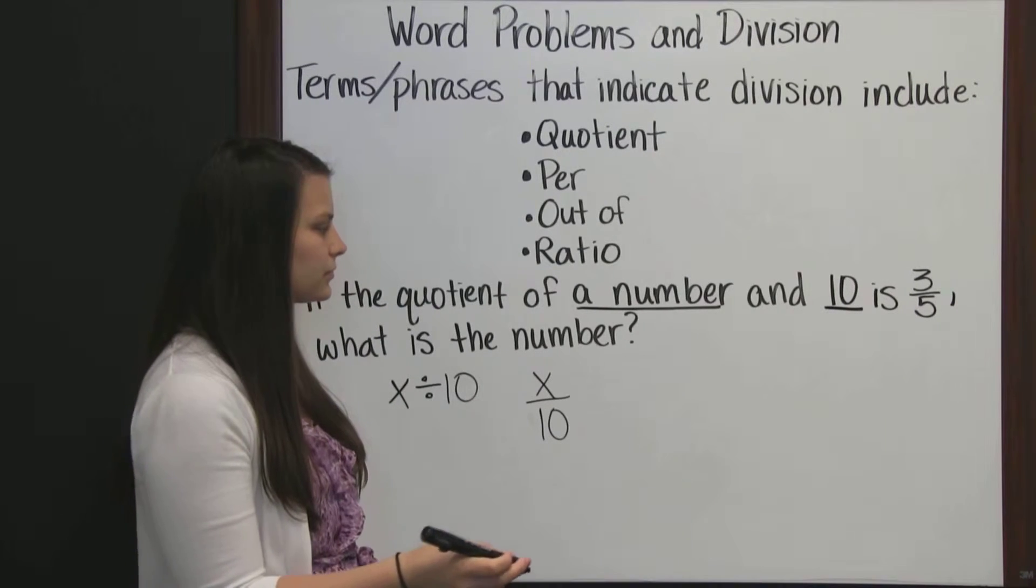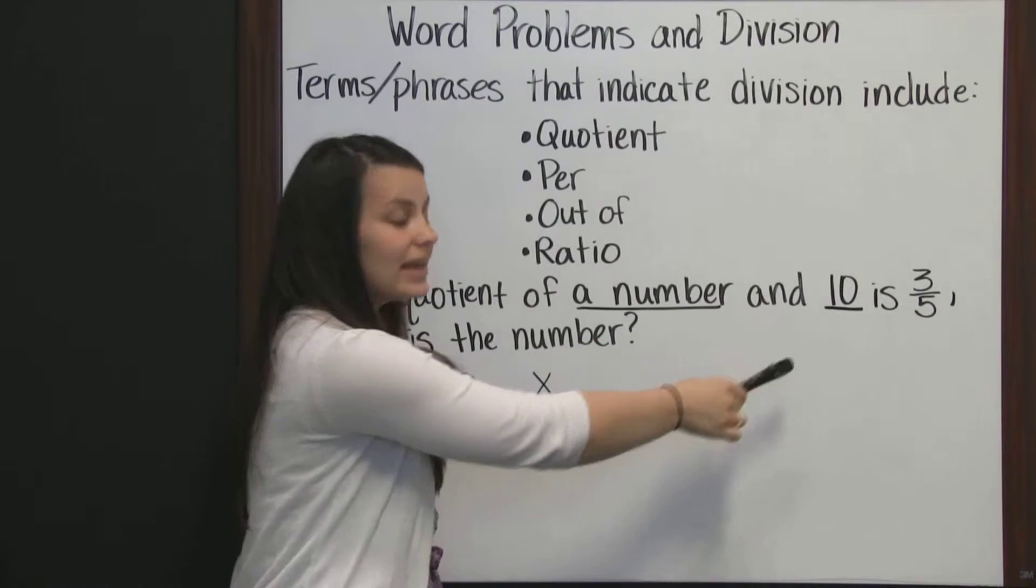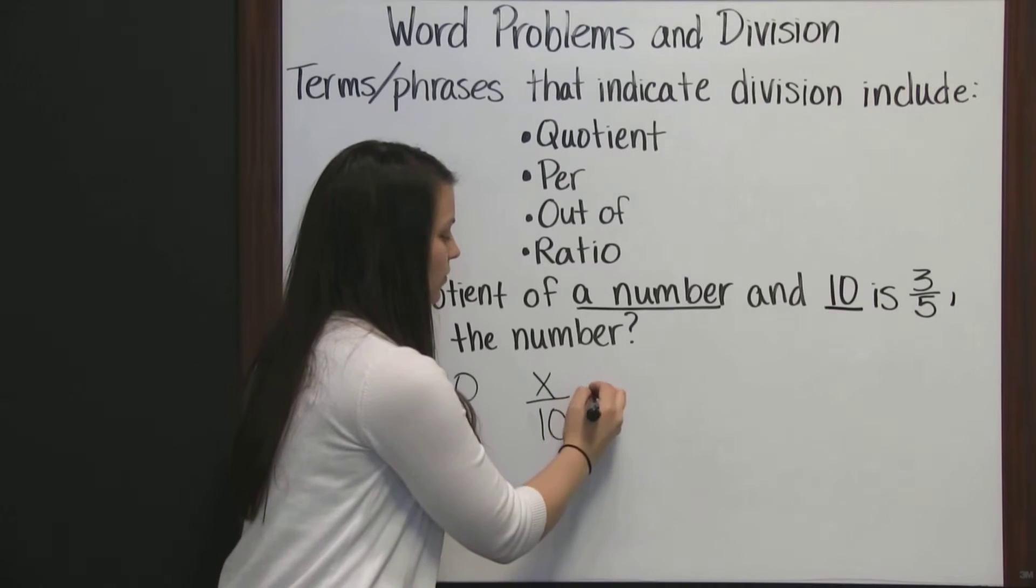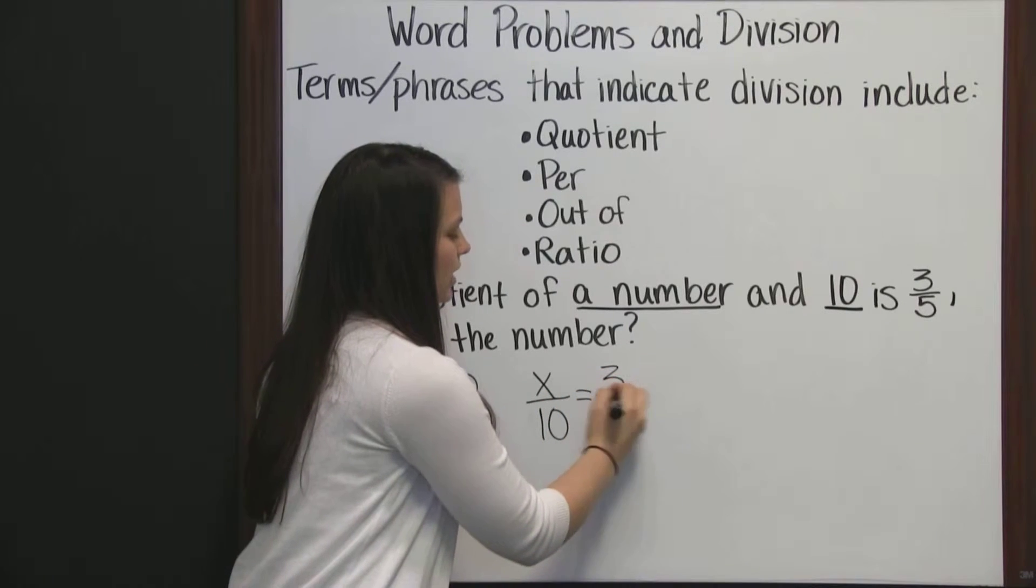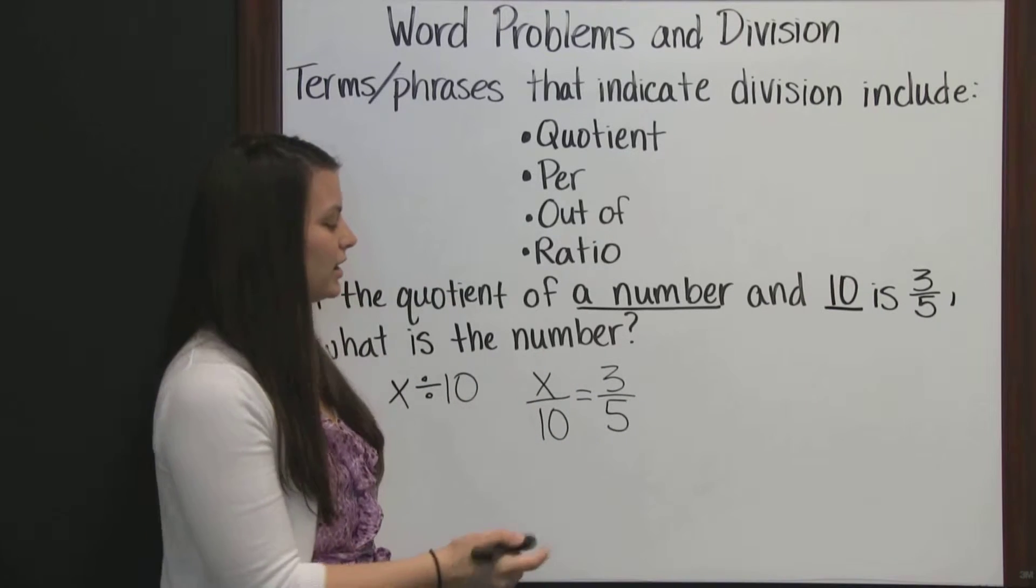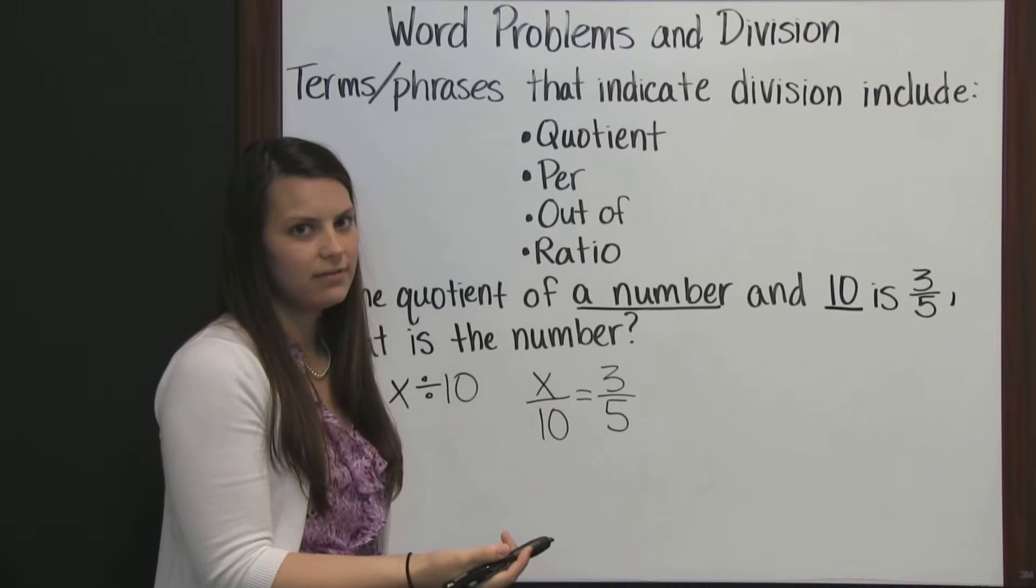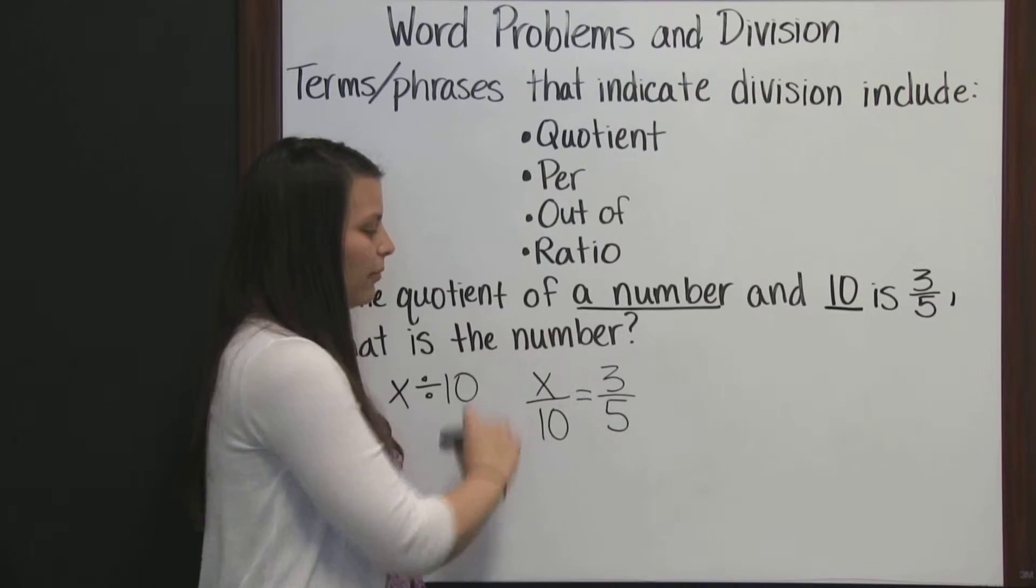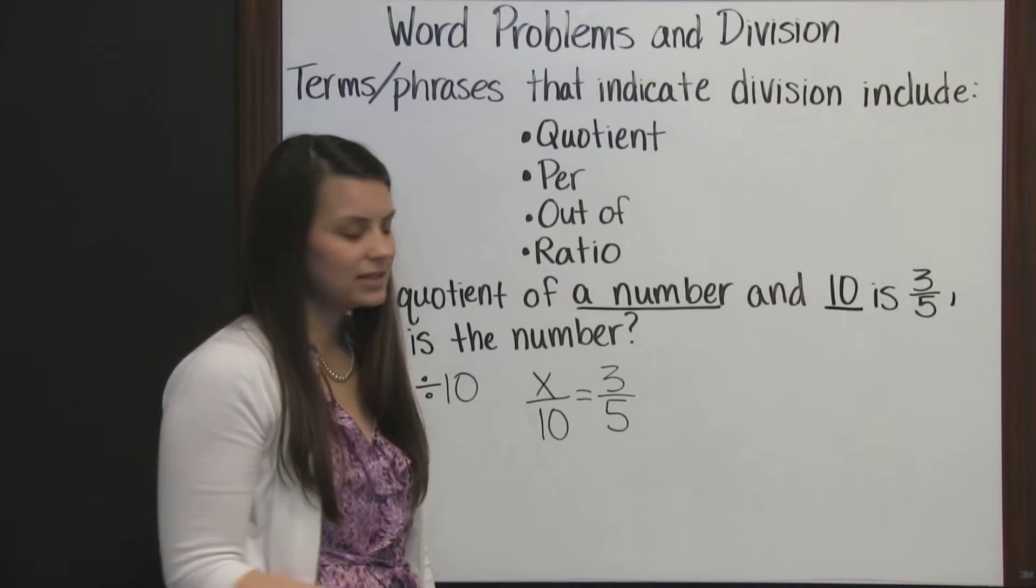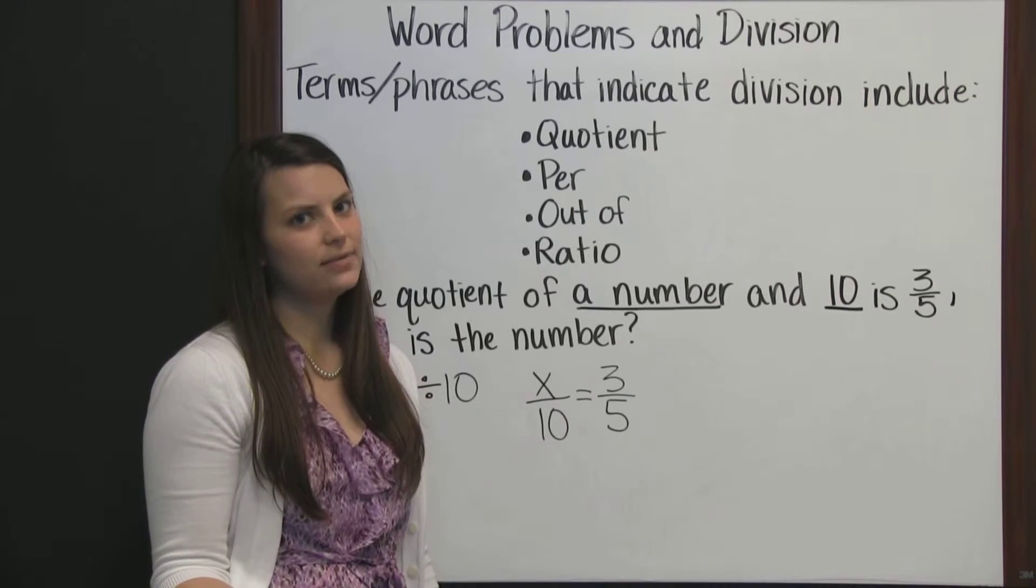Let's finish the sentence. If the quotient of a number and ten is three-fifths, is equals three-fifths. Now since I chose to write it this way, x divided by ten equals three divided by five, it looks like a proportion. And that's because it is one. All a proportion is, is a ratio equal to a ratio. And that's what I have here.